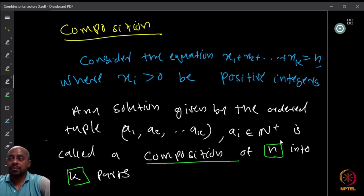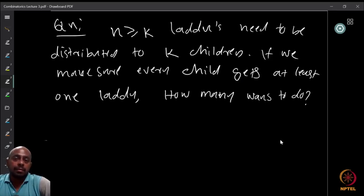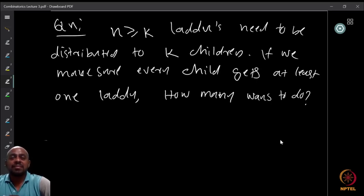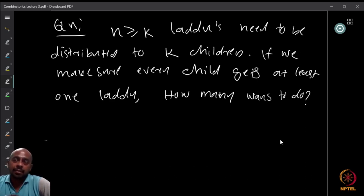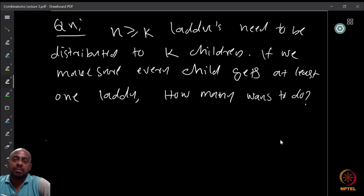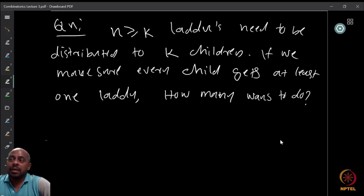We will first try to count the number of compositions of n into k parts. To make the lectures more enjoyable, let us convert this into a more relatable form. Suppose we are given n laddus — say identical Tirupati laddus, one of the most famous and tastiest — and we want to distribute them to k children.